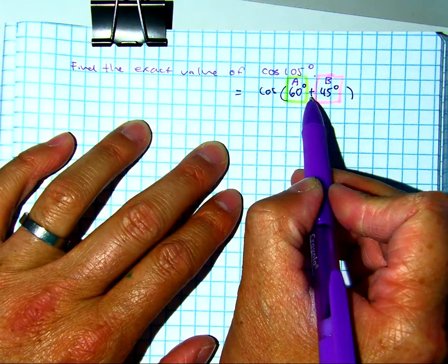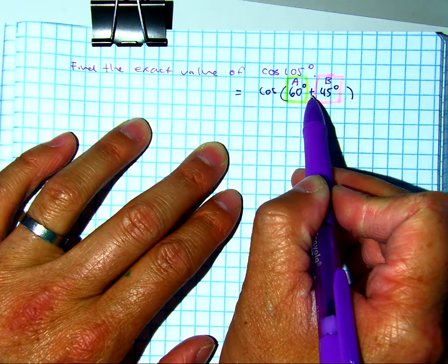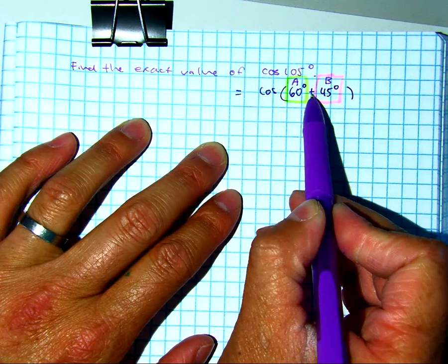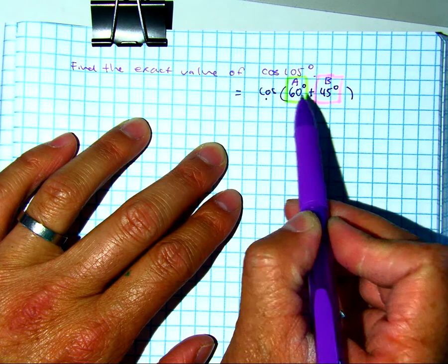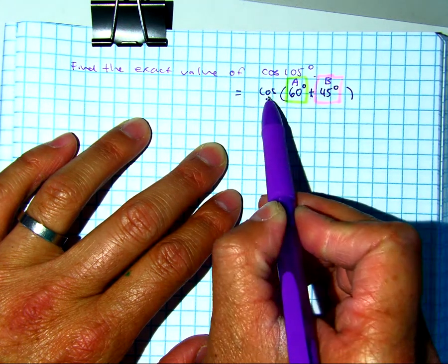We're going to read now. Class, is this plus or minus? Sum or difference? Sum. So this is the sum identity of cosine. What is it called, class? Sum identity of cosine.